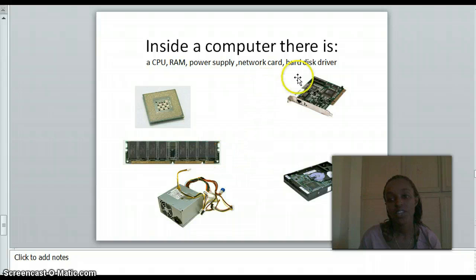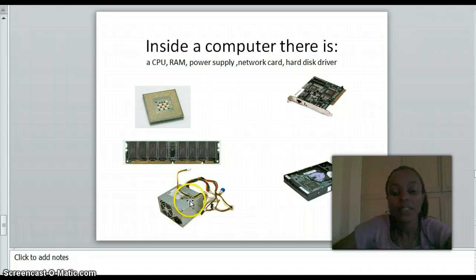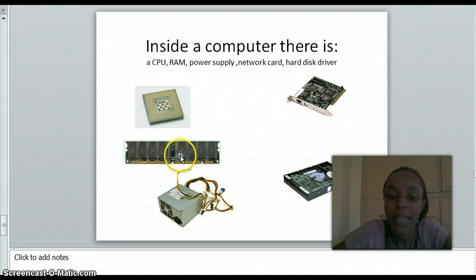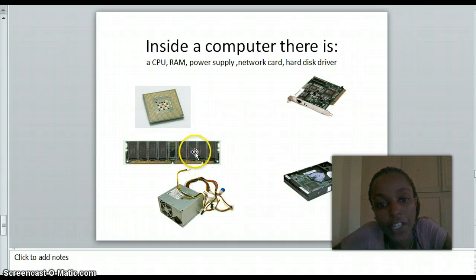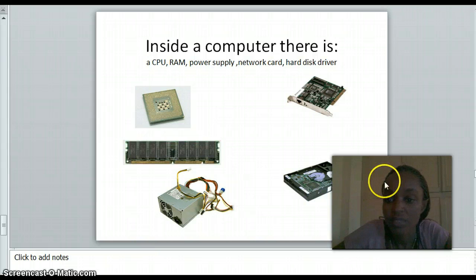The power supply is this one. Network cards are here. Then the hard disk drive is inside. The CD drive is what gives the computer access to CDs. The power supply gives the computer power. RAM stores temporary information, and the CPU is the central processing unit of the computer. CDs are inserted here.